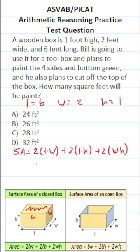But since we're only painting the bottom, we're going to get rid of one of those. So the surface area of the box with the top cut off is going to be length times width plus two length times height plus two width times height.